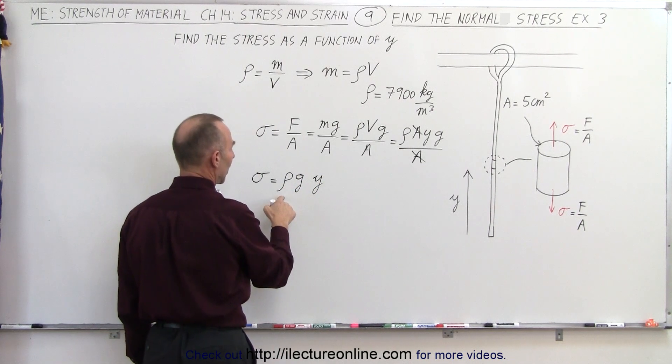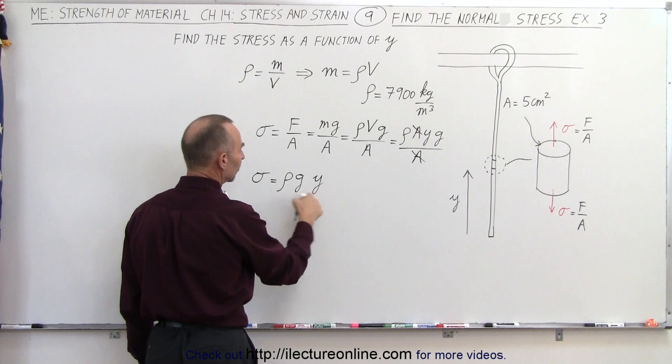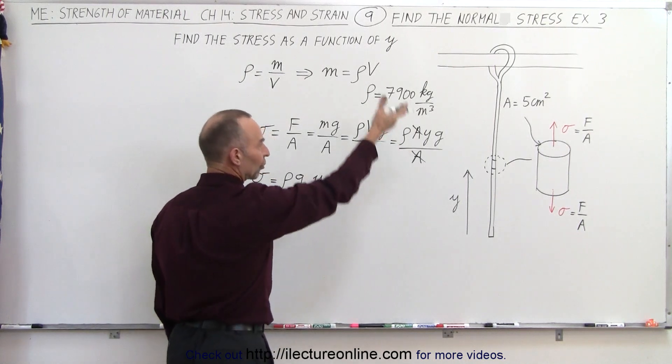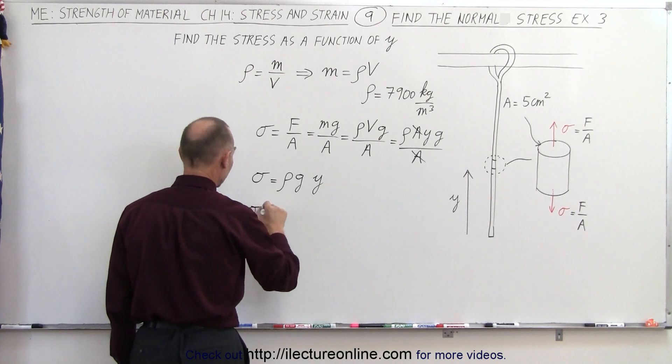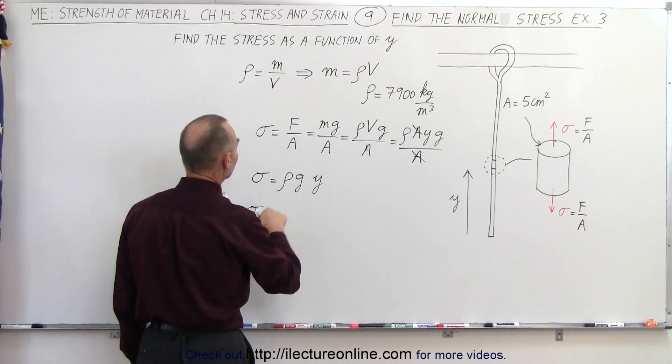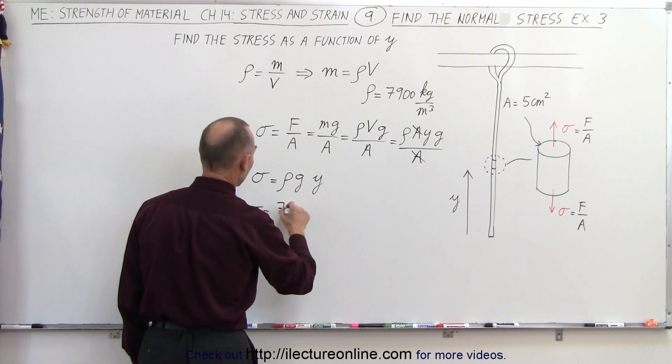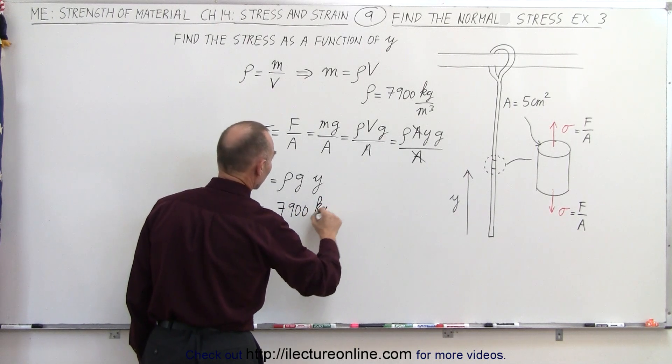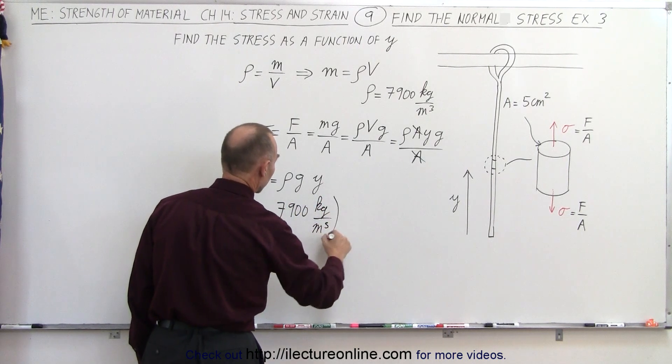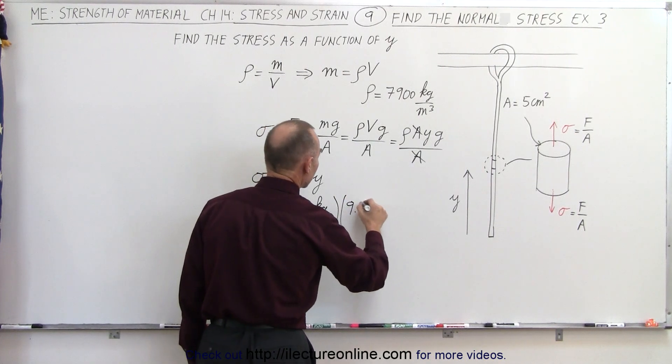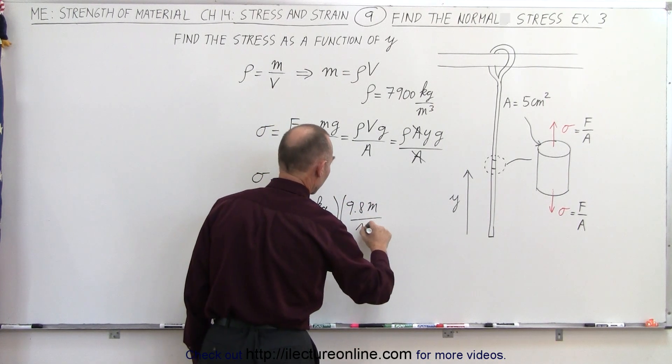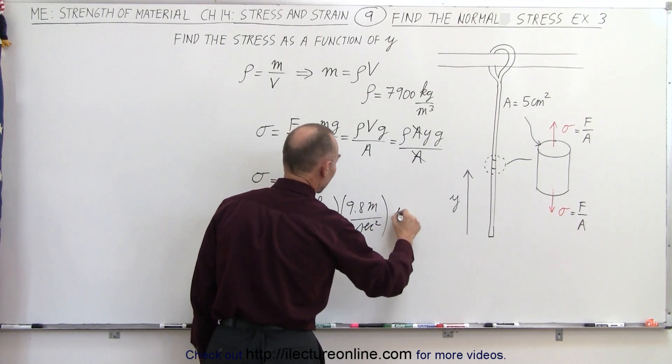Now we write this as a function of y. Notice that density and g are constants, and y is the variable as you go further up the cable. So the stress equals the density, which is 7,900 kilograms per cubic meter, times g, which is 9.8 meters per second squared, times y.